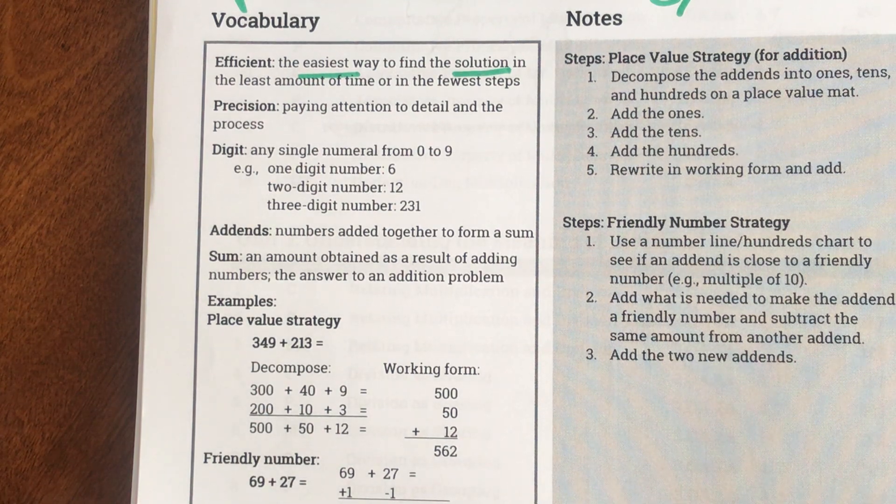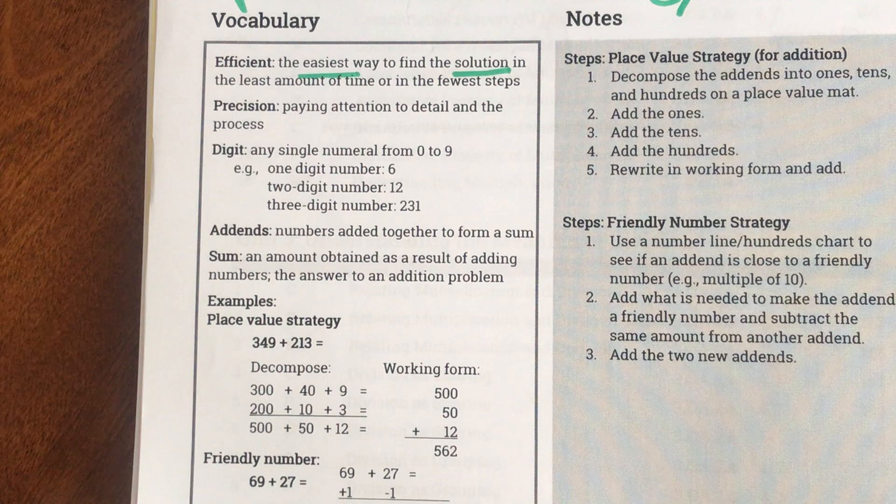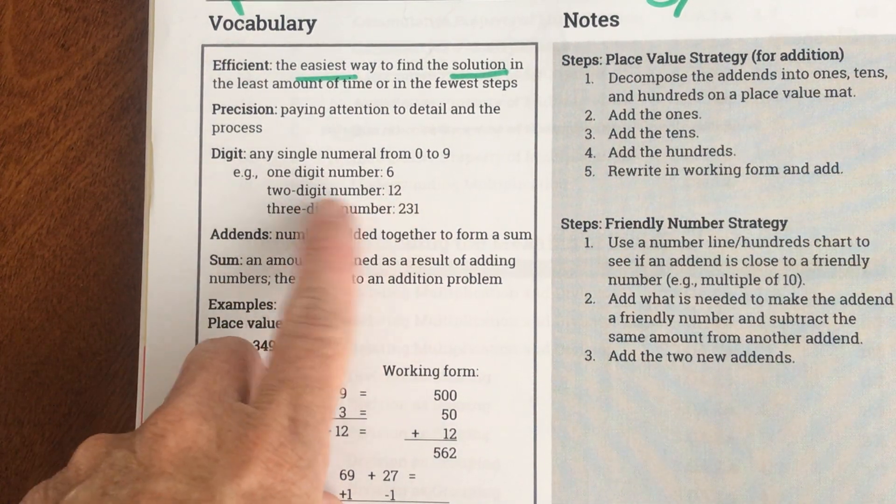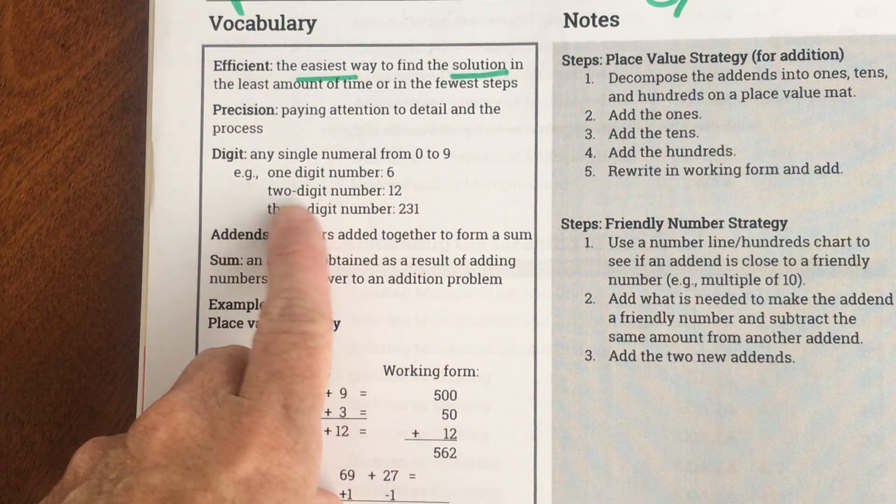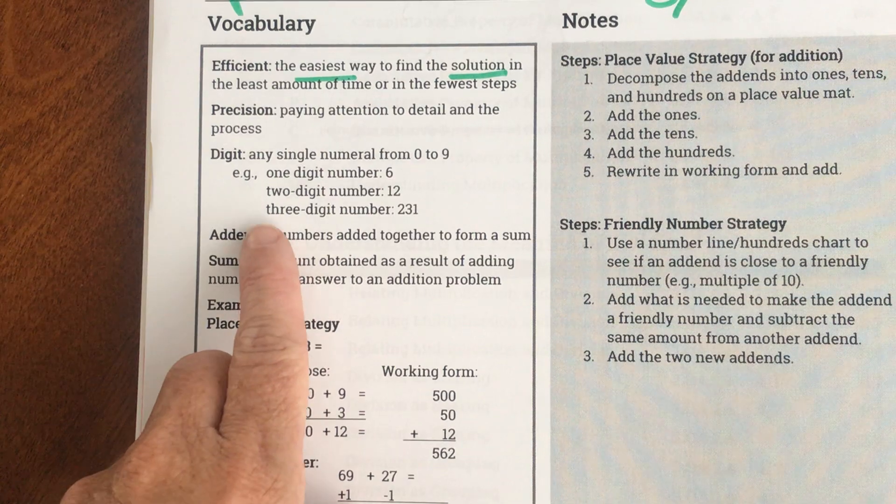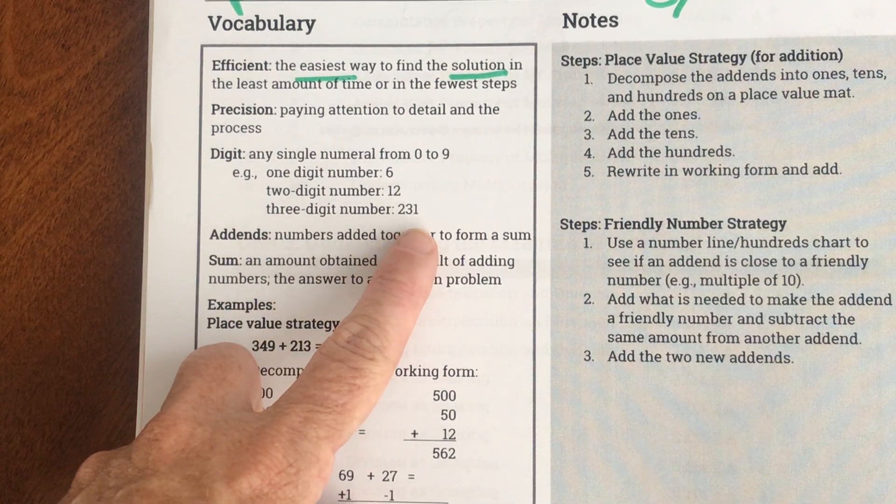Okay, our next word says digit. Any single numeral from zero to nine. So one digit is six. So the number 12 actually is a two digit number because there's two digits in it. A three digit number might be 231.